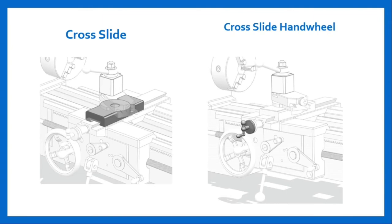The next component of carriage assembly is the cross slide and cross slide hand wheel. The cross slide is mounted on top of the saddle. The tool can be moved at right angles to the lathe axis by rotation of the cross slide wheel. Graduations are provided on the hand wheel to give the correct amount of feed. Compound rest and tool post are mounted on the cross slide. It can be moved by hand wheel or power feed. The cross slide hand wheel is provided for manual positioning. Turning this hand wheel moves the cross slide in a radial direction with respect to the workpiece, resulting in a diameter change.